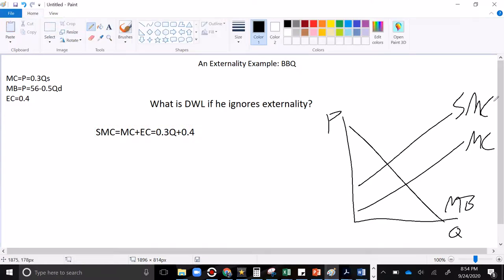So this is 0.3Q plus 0.4, and that's your SMC curve. We know that for our economist barbecuer friend, this is the market quantity—private marginal cost equals private marginal benefit, ignoring the externalities. He also knows that this is the efficient quantity, the socially optimal outcome. And the deadweight loss comes from the fact that these don't match. The market overproduces the good—market quantity is greater than the efficient quantity. And for those extra transactions, the social marginal cost is greater than the marginal benefits.